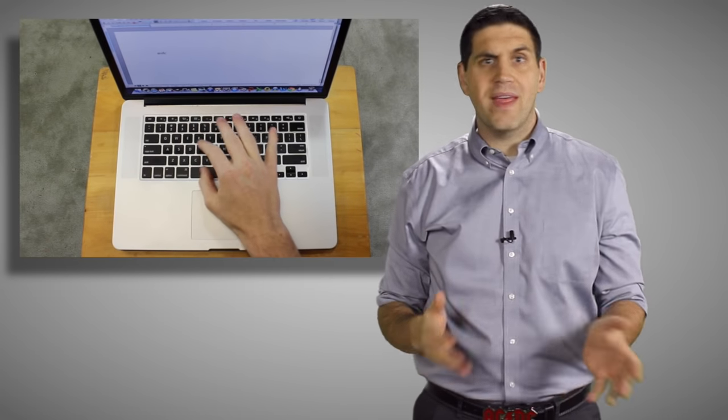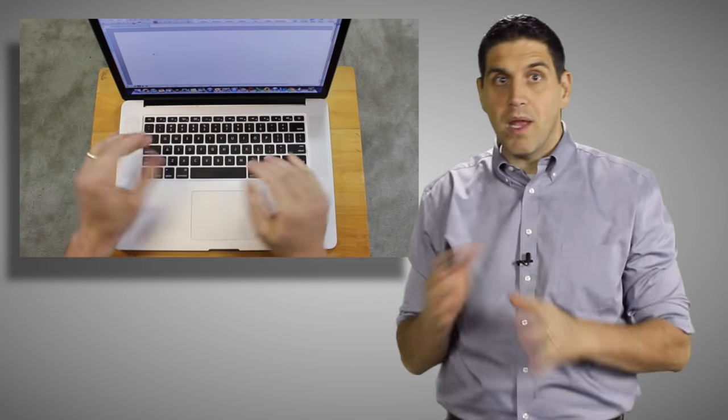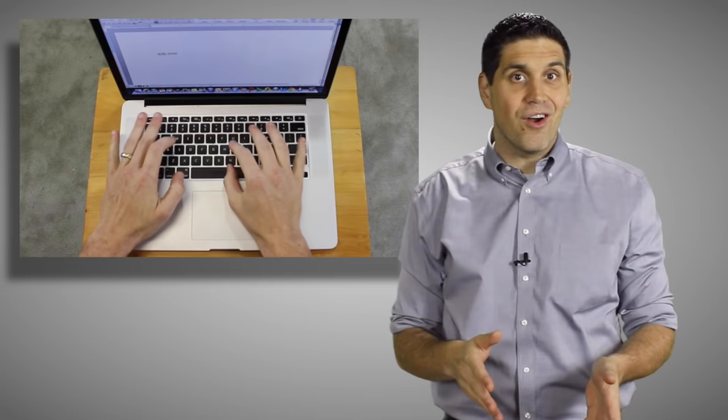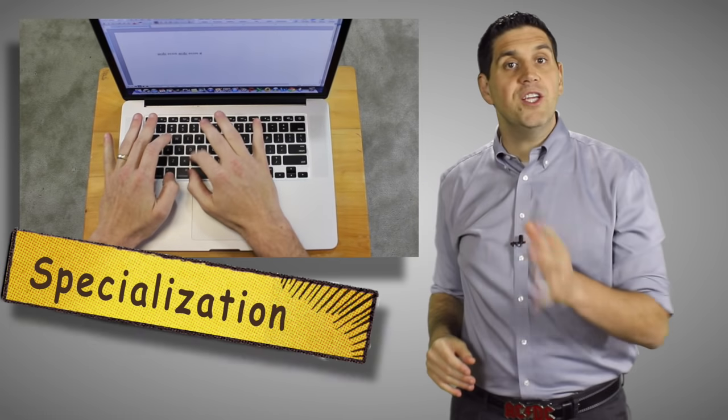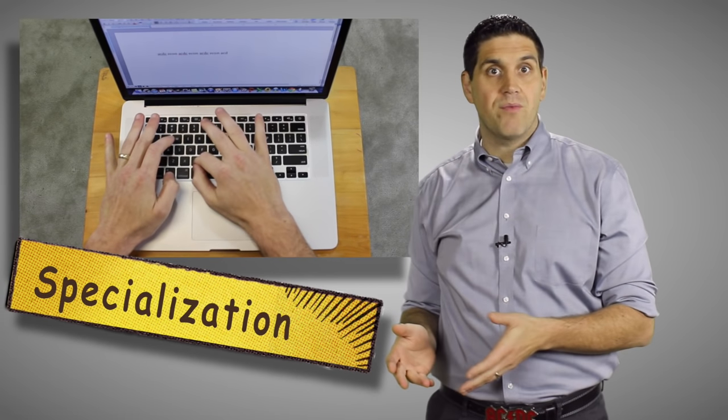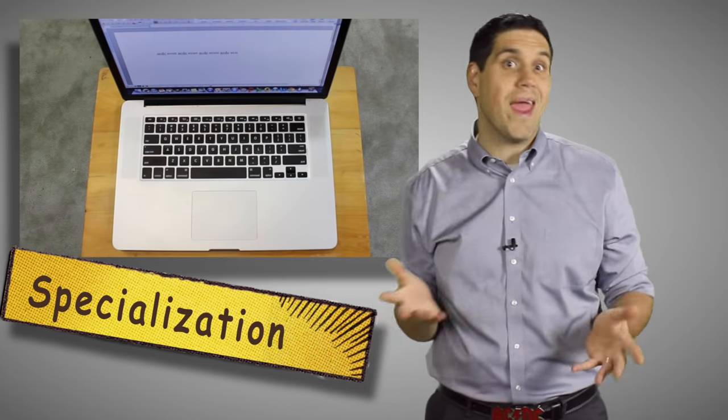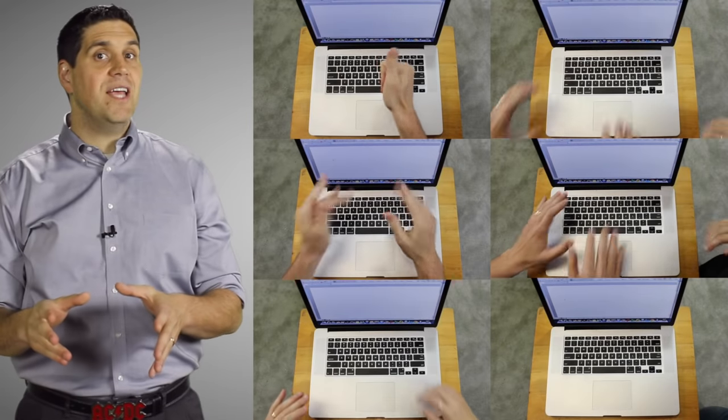When you hire no workers, you get no output. But when you hire one worker, they have to do everything on their own and they can't specialize. Two workers can split up the work and produce a whole lot more together than any one of them could on their own. This shows the benefits of specialization. Two heads are better than one. In this case, two hands are better than one. But specialization has its limits.